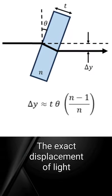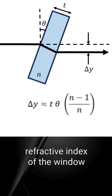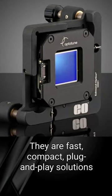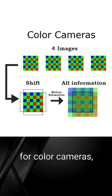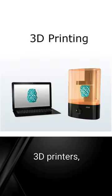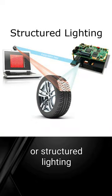The exact displacement of light depends on the thickness and refractive index of the window. They are fast, compact, plug-and-play solutions for color cameras, monochrome cameras, projection systems for heads-up displays, 3D printers, or structured lighting.